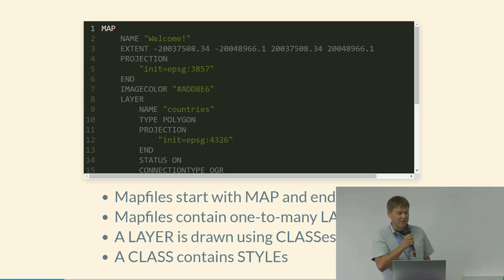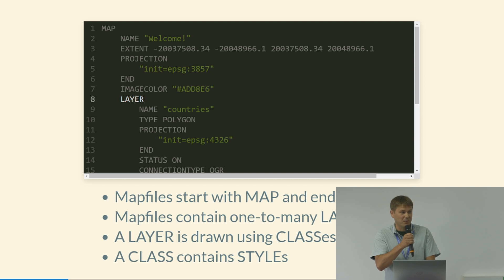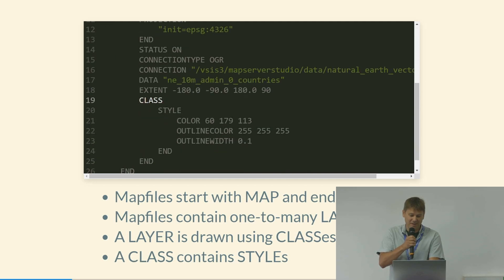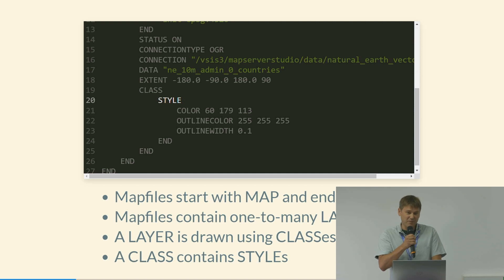Here's an example of a MapFile. They're structured in blocks. The top-level block is a map block, and then within your map you have layers — these are your layers of data. You can have multiple layers in your MapFile. Each layer can have classes to classify the data, split up based on attributes. And then each class can have a number of styles, so you can style your data.